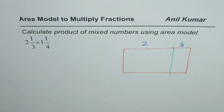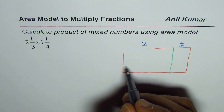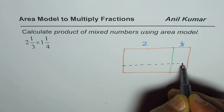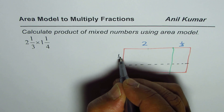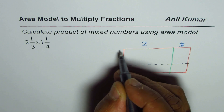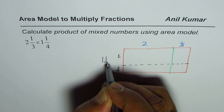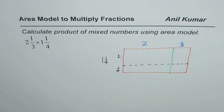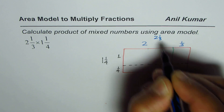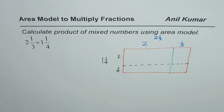Let me draw another line here dividing the width into two parts, where this is 1 whole and this one is 1/4. So the width here is 1 1/4 and the length is 2 1/3. That is how we have divided our rectangle.